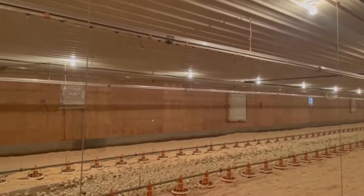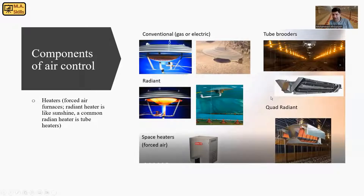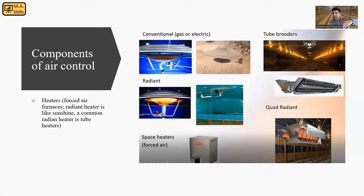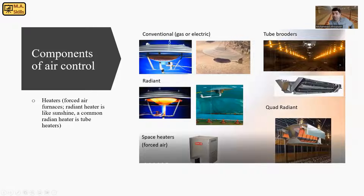Radiant heaters — you can see in this picture several of them. They are like sunshine; they can radiate heat onto the ground and the chicks can get warm over there. A common radiant heater is tube heaters, as you can see in these pictures. By that, we are going to heat the floor and the birds can get a comfortable zone to grow.